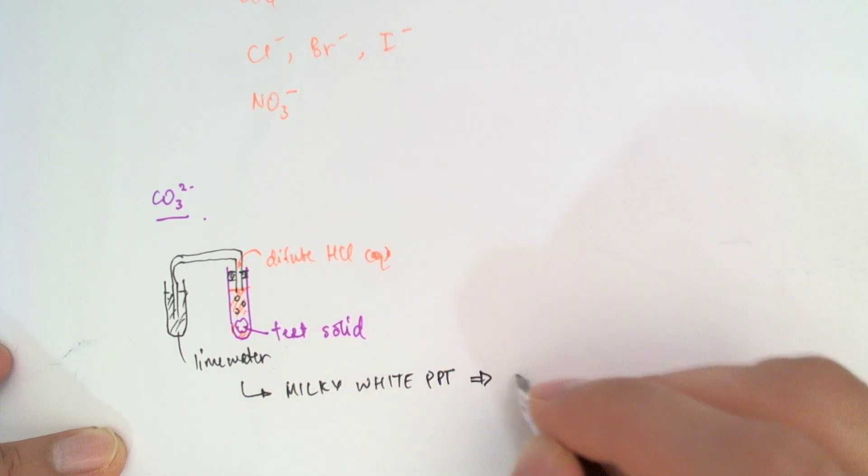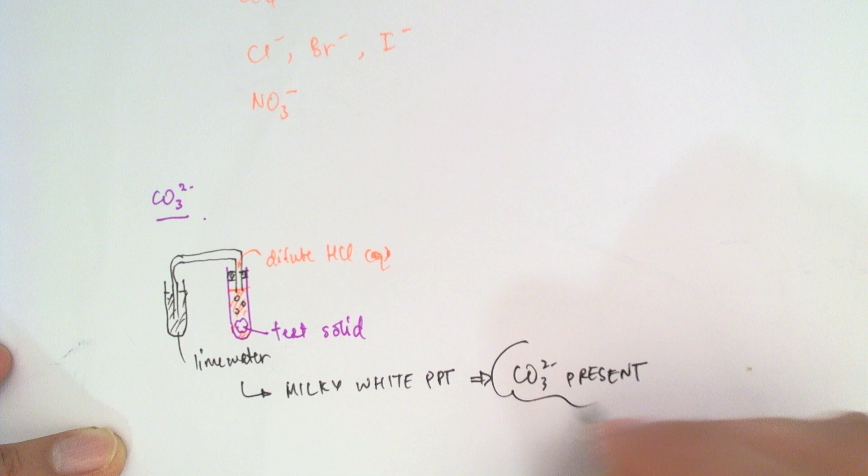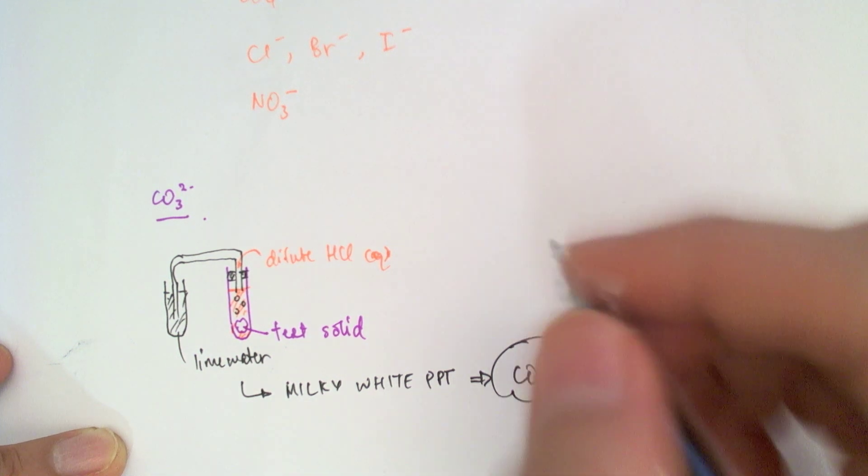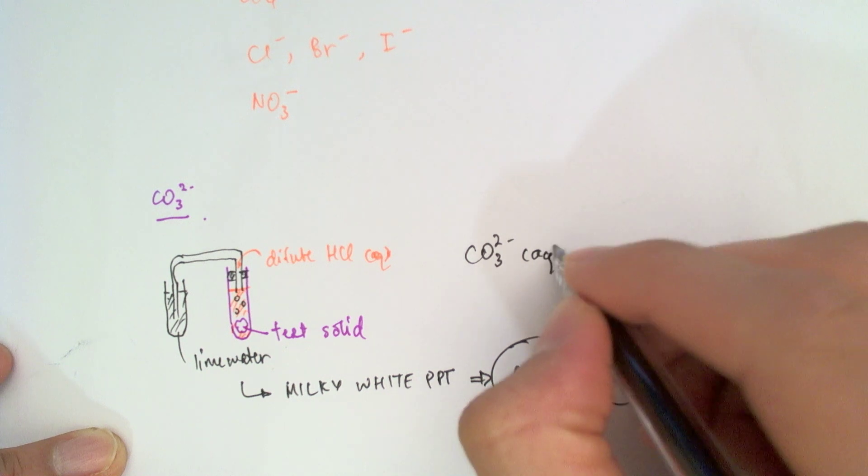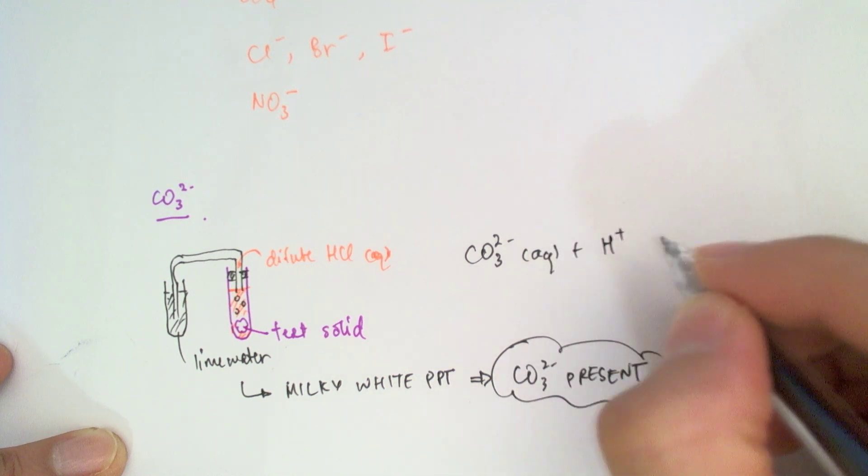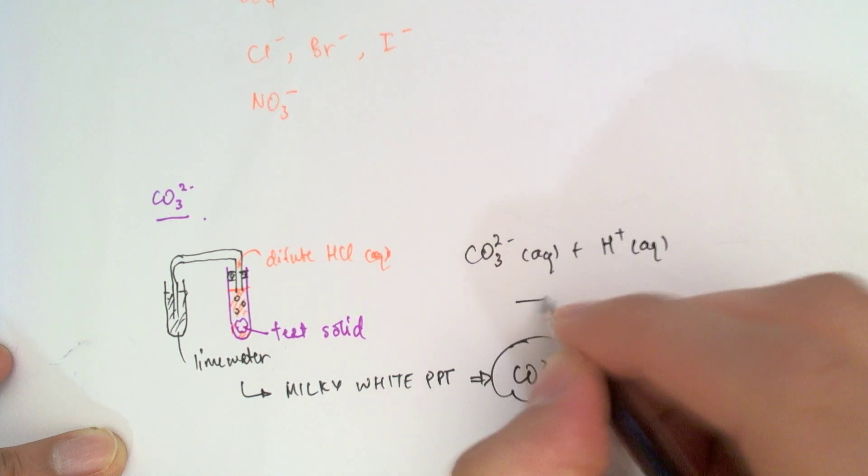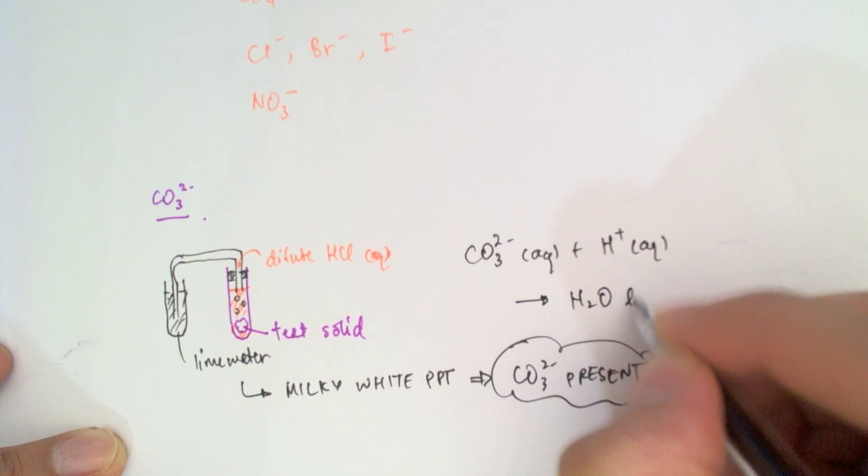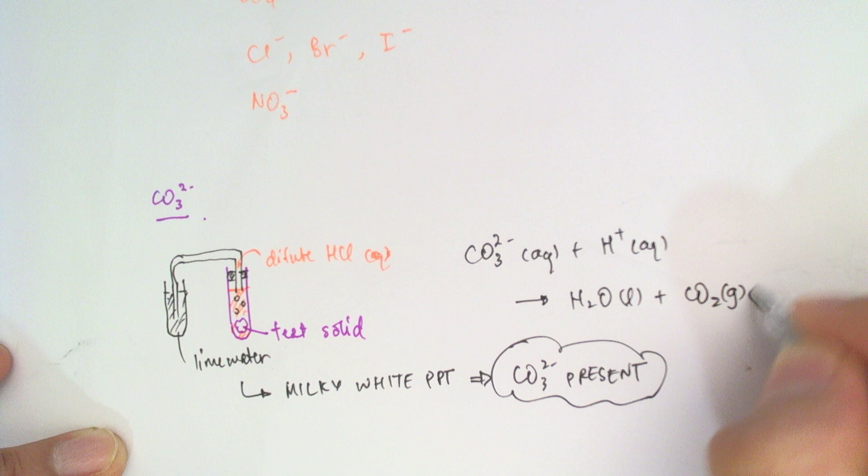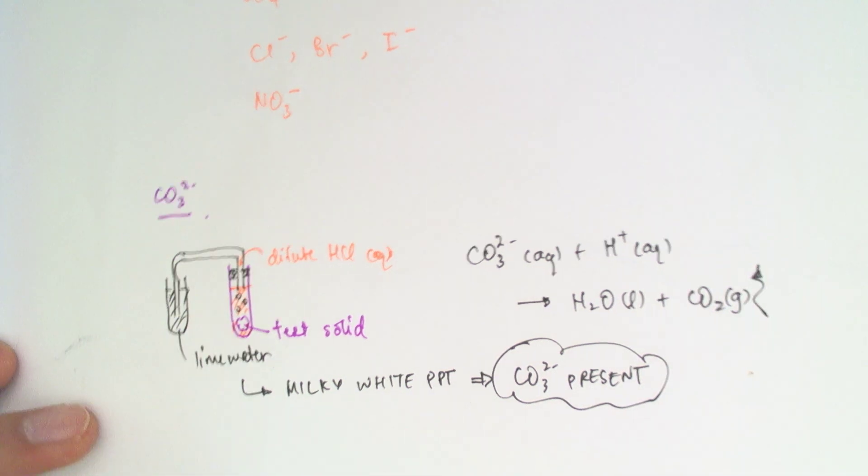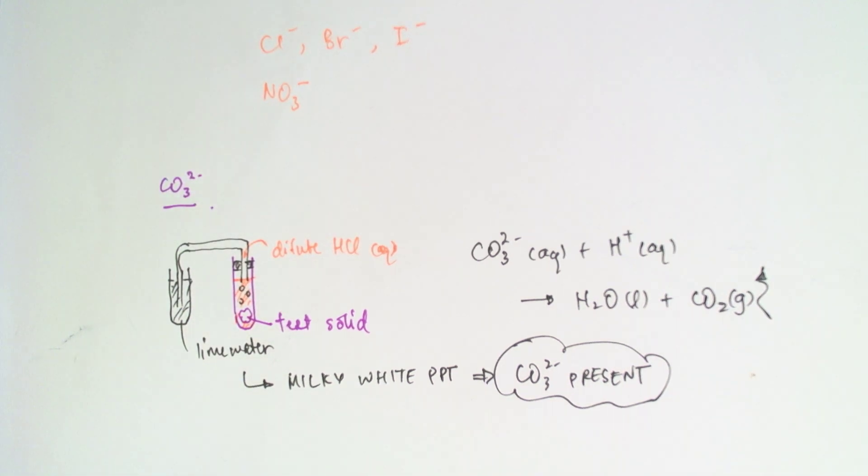This confirms the presence of carbonates. So the reaction going on here is your carbonate ions are reacting with the hydrogen ions from the acid to give me some liquid water and of course, the carbon dioxide gas liberated that turns the lime water cloudy.